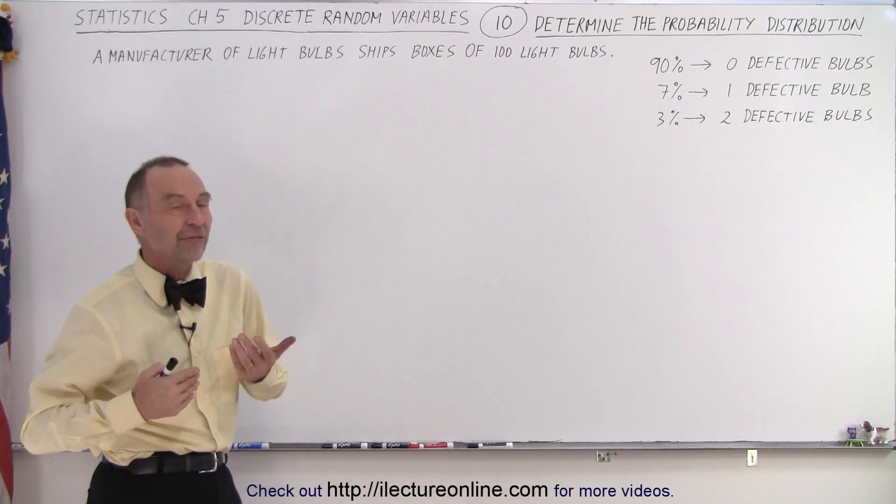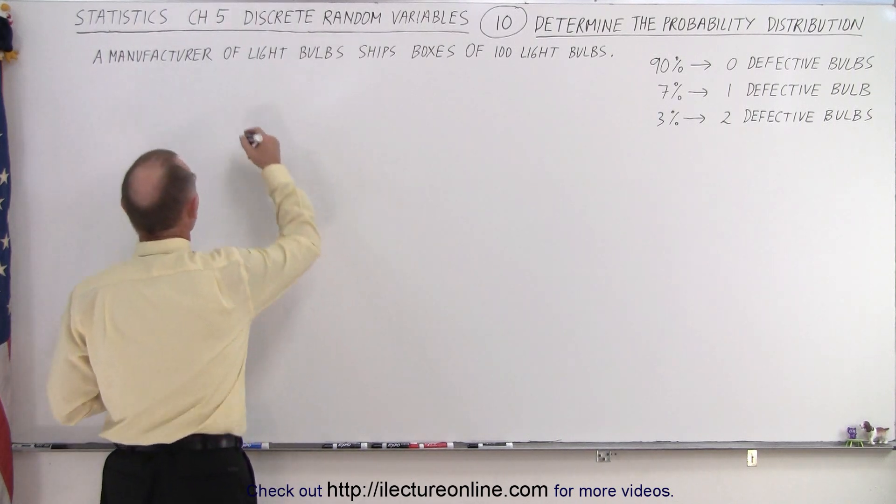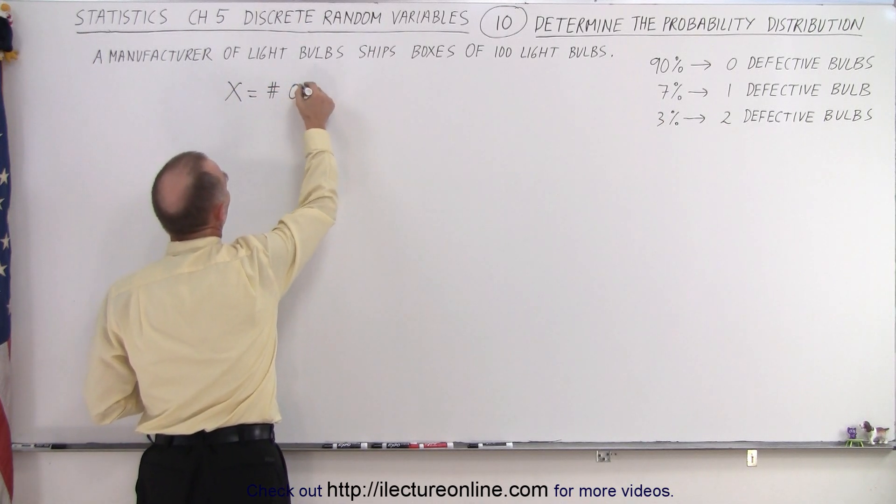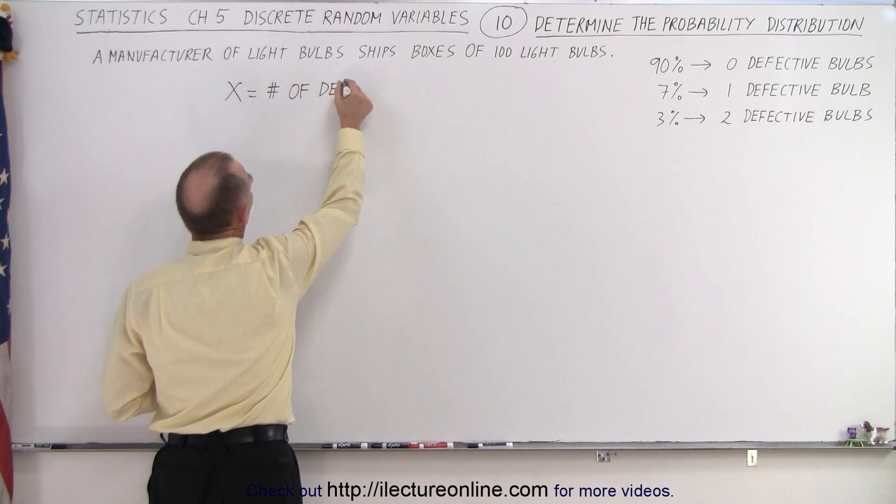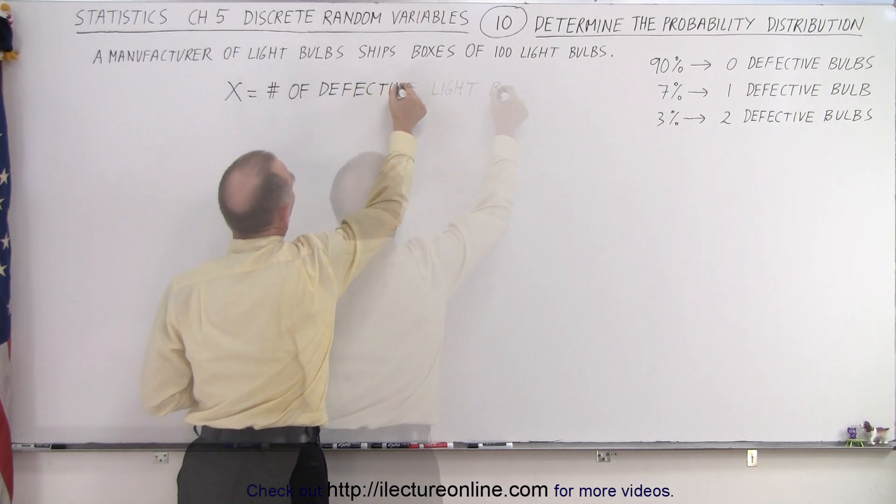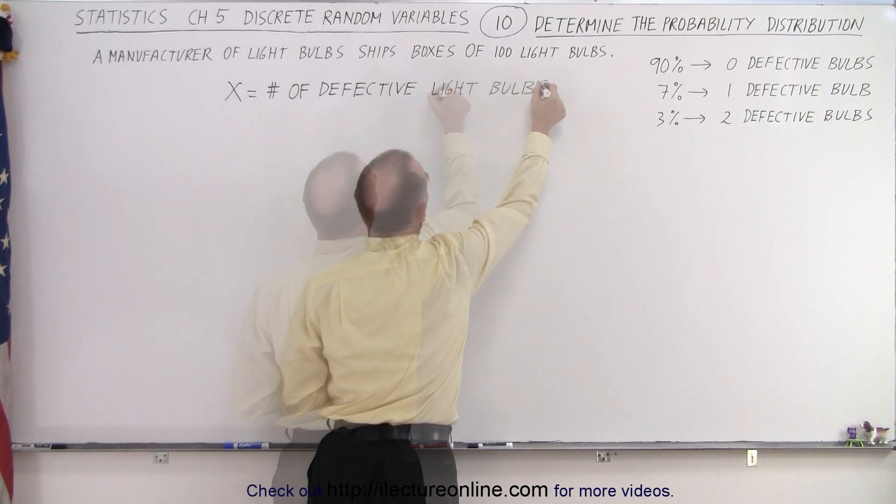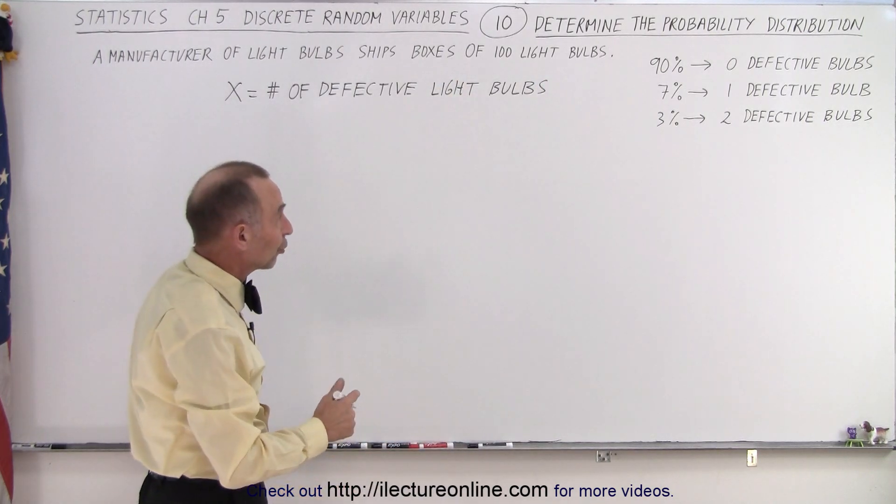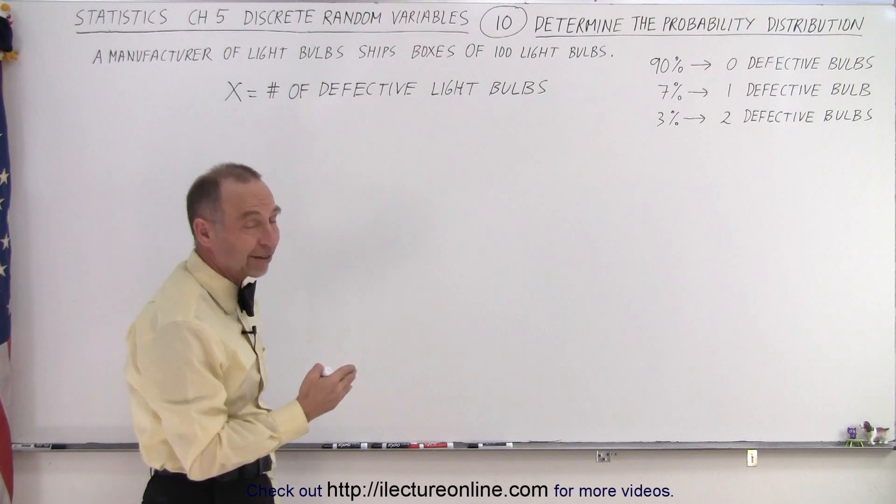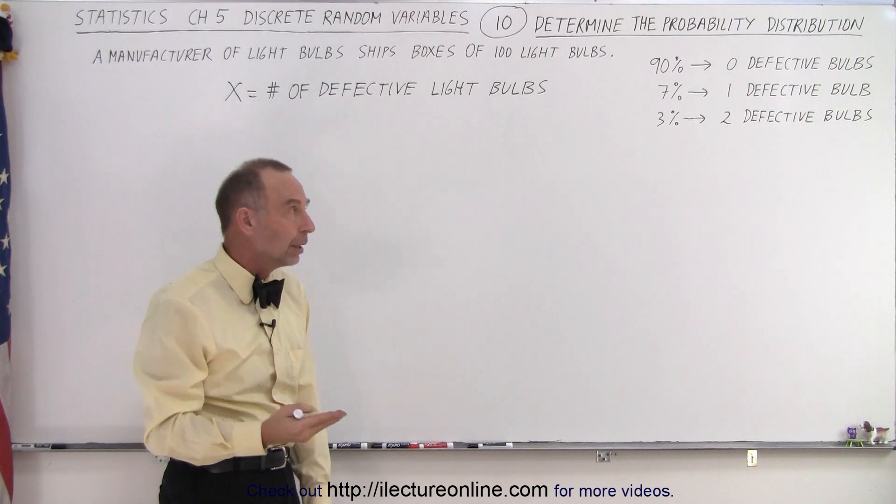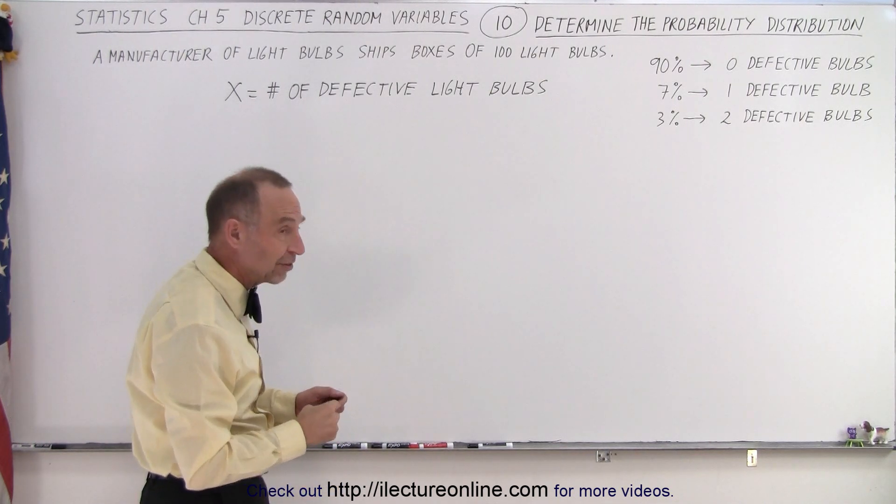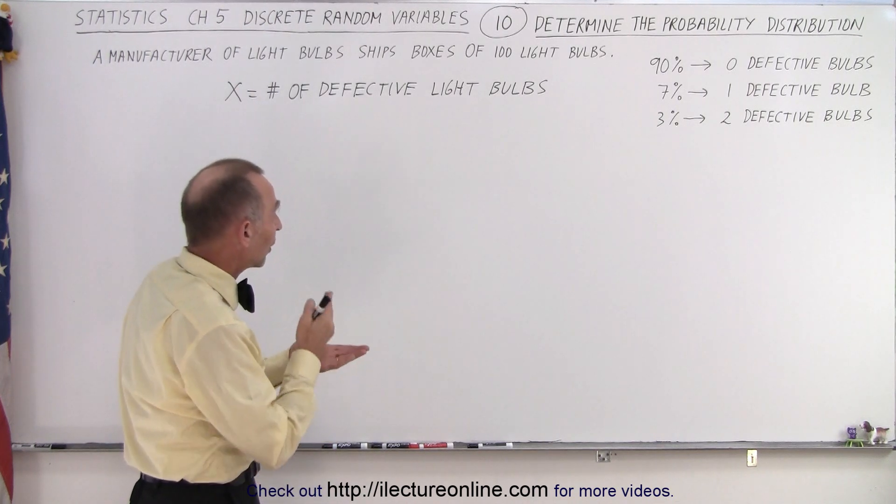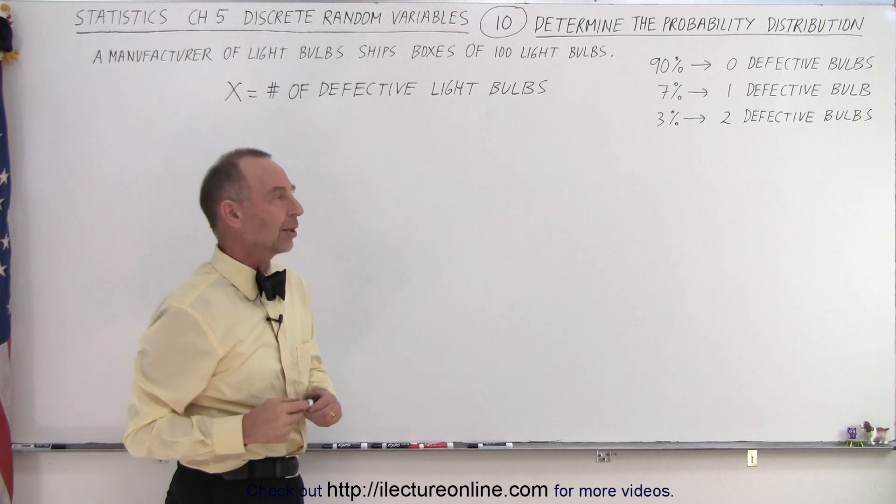Well, first, let's define a variable. We're going to let X equal the number of defective light bulbs. So then we can see that there's only three possibilities: X can be 0, X can be 1, or X can be 2, which makes it a discrete random variable because it can only have integer values.